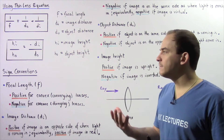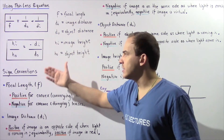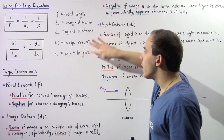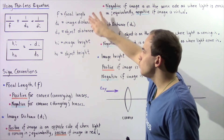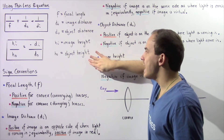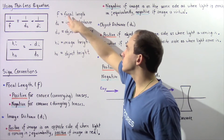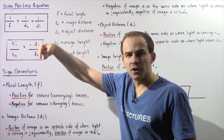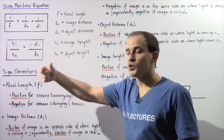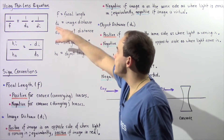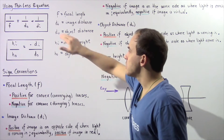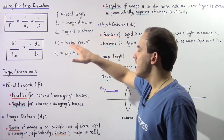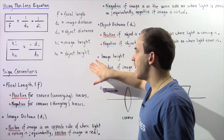The only difficult aspect in using these two equations is knowing when these quantities are positive and when they are negative. We have the focal length given by f, which is the distance from the center of the lens to our focal point. Di is the image distance, do is the object distance, hi is the image height, and ho is the object height.